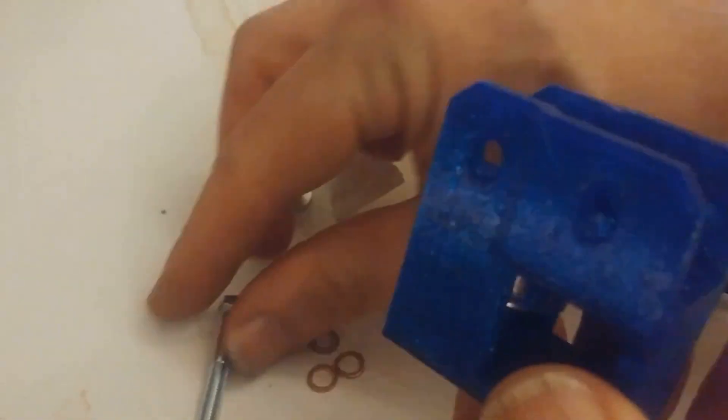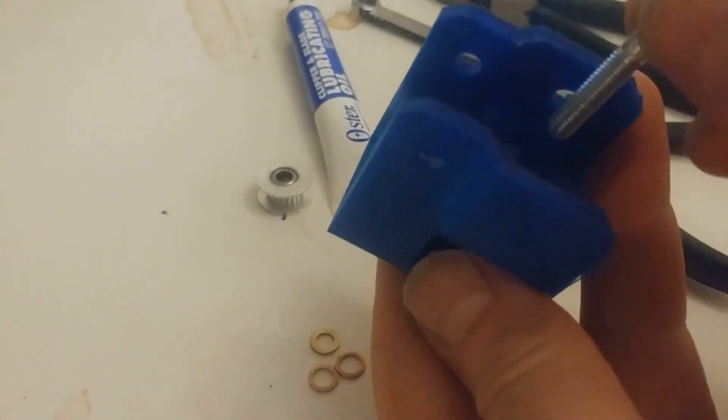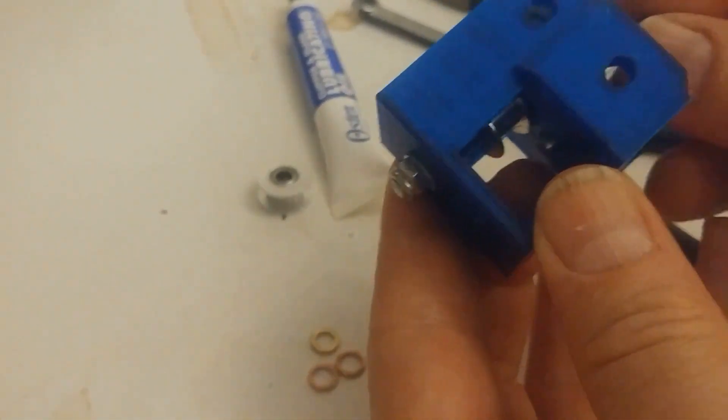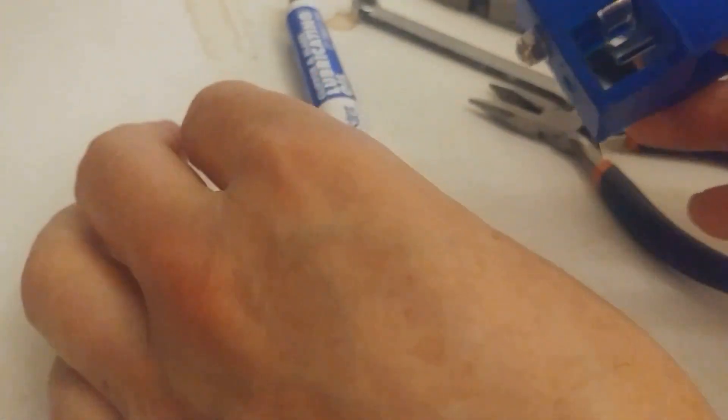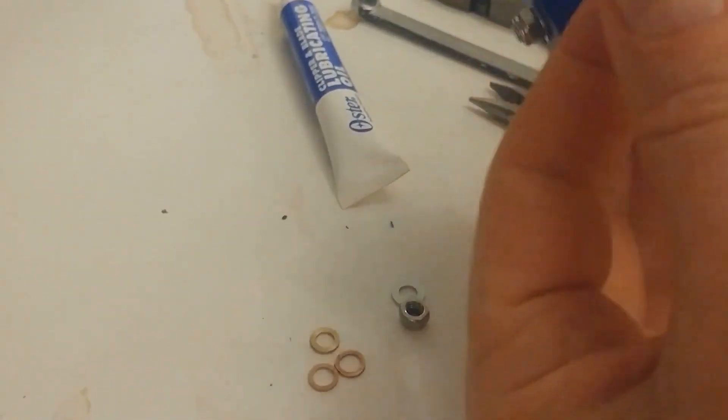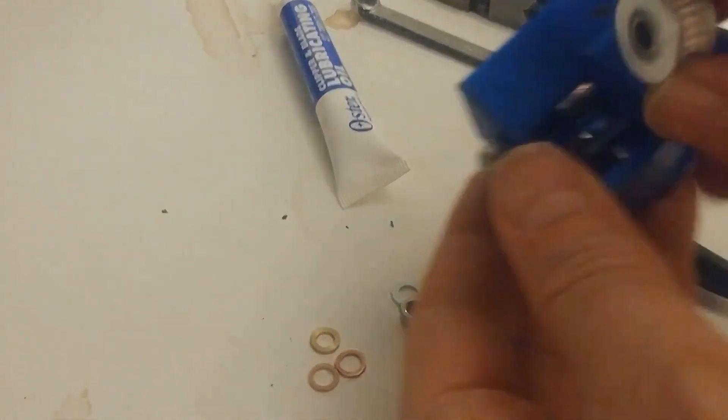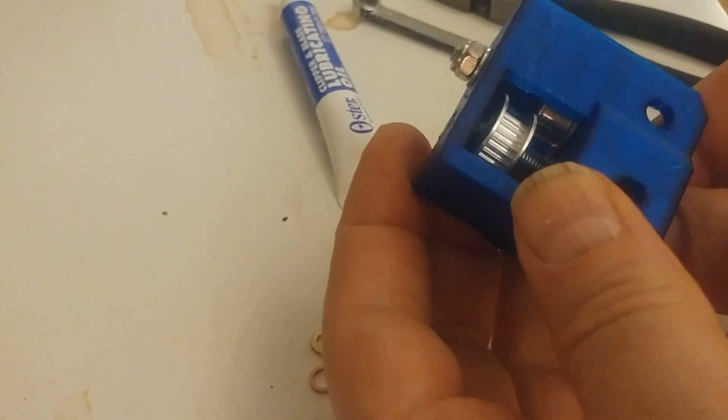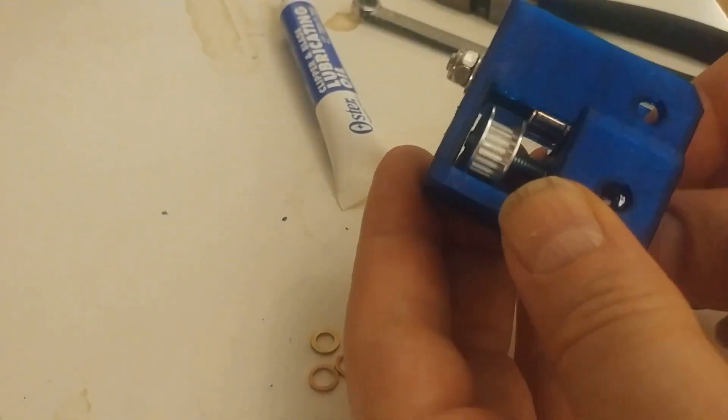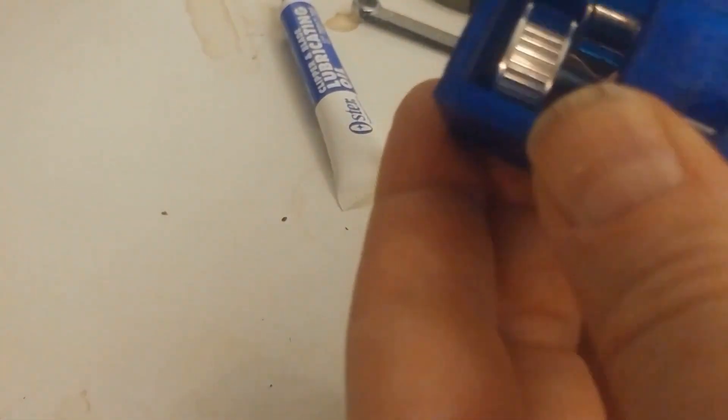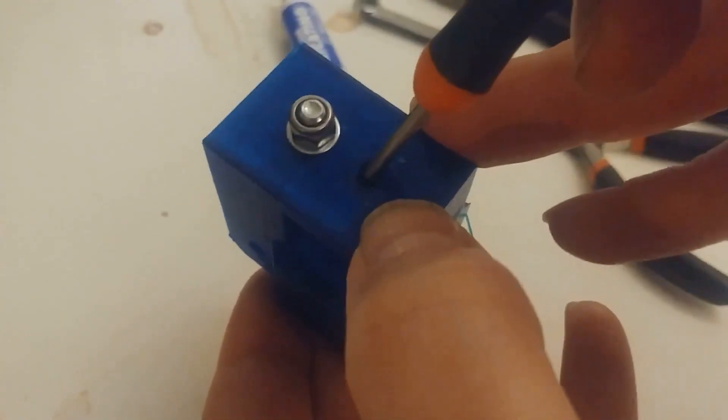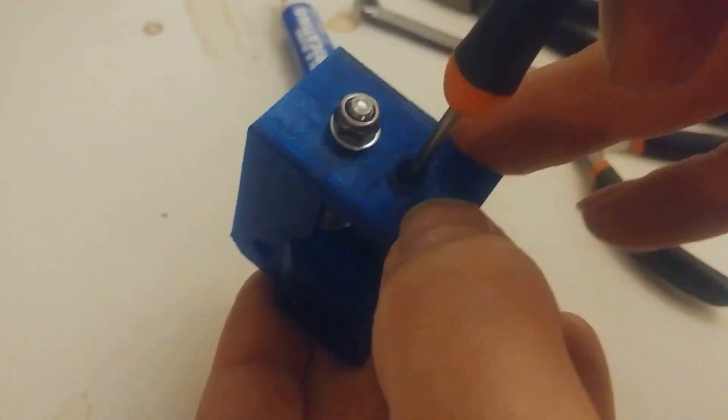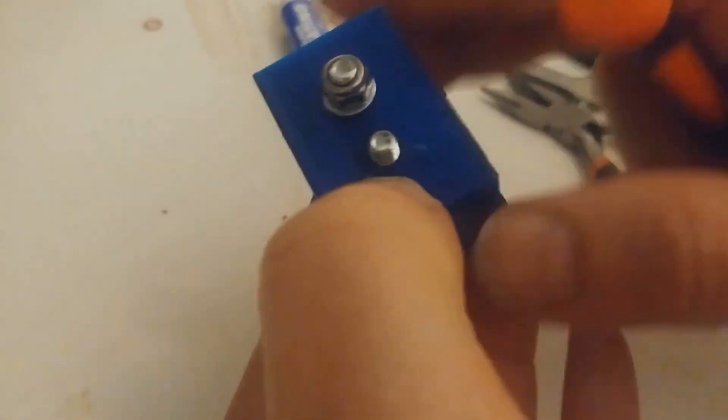Let's do the other side, starting with the bolt and then adding the tooth idler. At this point we should probably try to get one shim inside. Okay, there you go.